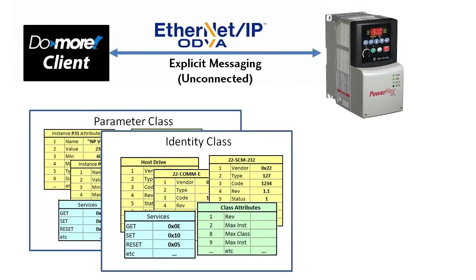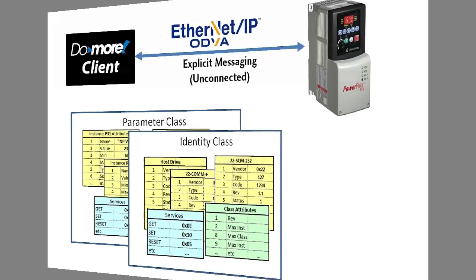If you're super ambitious, you could even write a program to query and fully auto-detect and configure an entire Ethernet IP system without knowing anything but the IP address of each device on the network — because you can ask every device who it is, what type it is, and then configure it appropriately. Very cool.